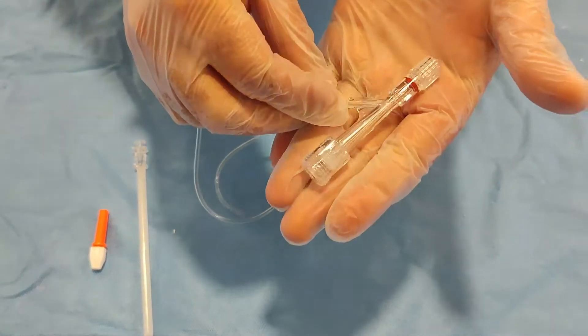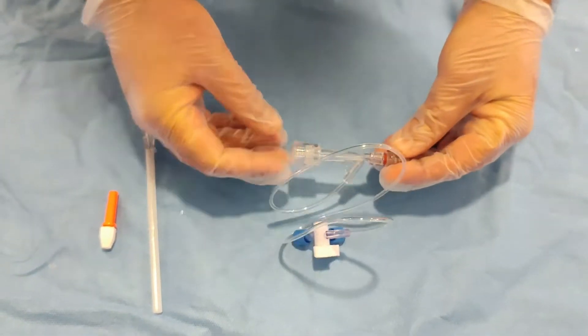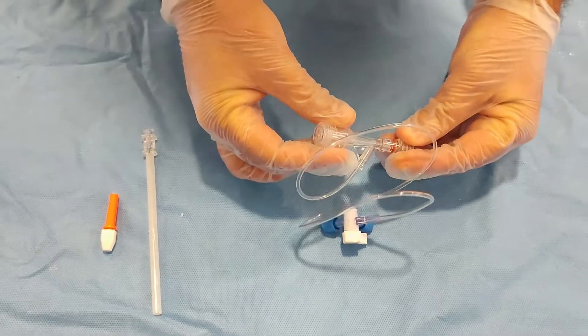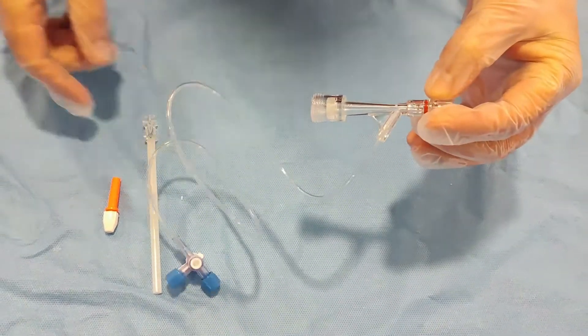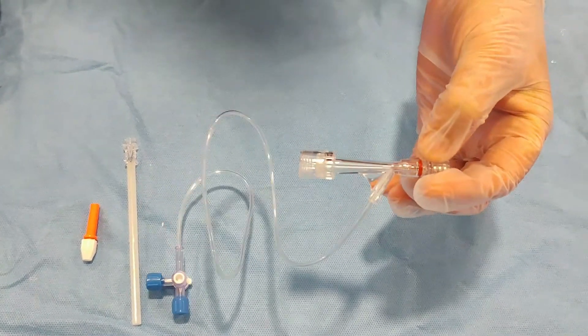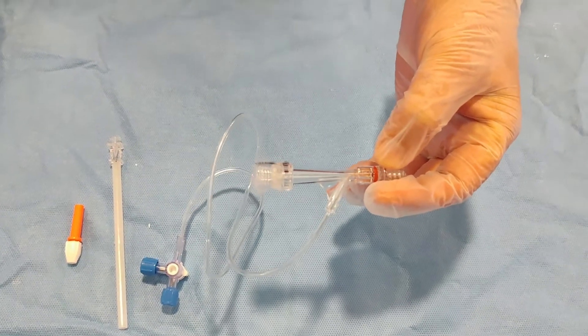Have a look. So this side goes to the catheter, to the patient, and this side towards the operator or the doctor. Why is this called the y-connector or the anti-bleed? Because this one can be used for multi-purpose.